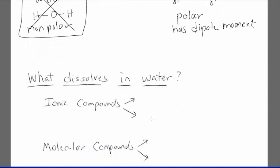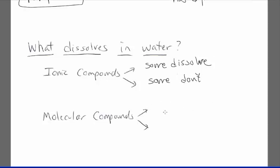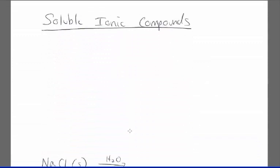A lot of chemistry involves things dissolving in water. For ionic compounds, some of them do dissolve in water, and some of them do not. For molecular compounds, some dissolve and some do not. So you can't tell what's going to dissolve by whether it's ionic or molecular. We're going to discuss which kinds dissolve and which kinds don't, starting with ionic compounds.